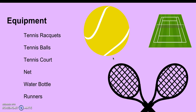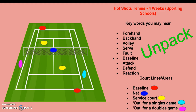The equipment we're going to be using for weeks one to five includes tennis rackets, a tennis ball, and we will be playing on a tennis court using the net. Also bring water bottles and runners please.